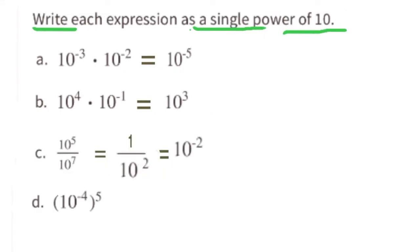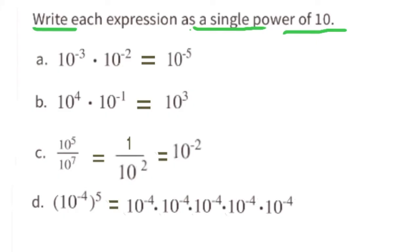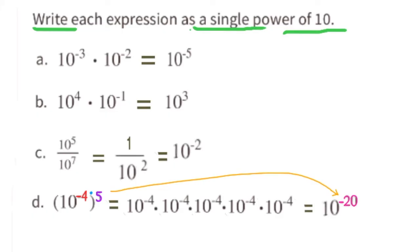Part D: Inside the parentheses is 10 to the power of negative 4, and outside is the power of 5. That means 5 groups of 10 to the power of negative 4. Adding the exponents: negative 4 five times equals negative 20. A shortcut is to multiply: negative 4 times positive 5 equals negative 20. Written as a single power of 10, this is 10 to the power of negative 20.